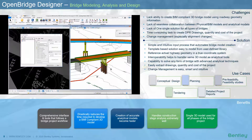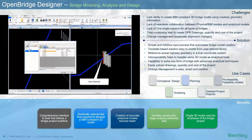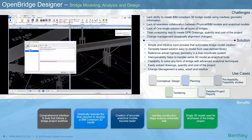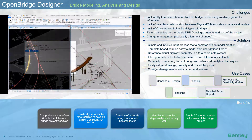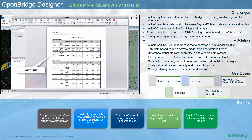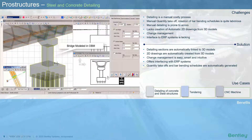OpenBridge Designer also offers clash detection analysis, which is useful especially in case of utilities crossing the foundations. As the bridge is modeled along the alignment, any change in alignment changes the bridge model automatically. Another important aspect of bridge design is detailing. Manual detailing is time consuming and costly, and manual quantity takeoff and bar bending schedules are quite laborious — change management is a challenge.